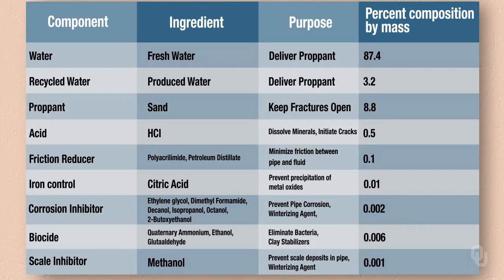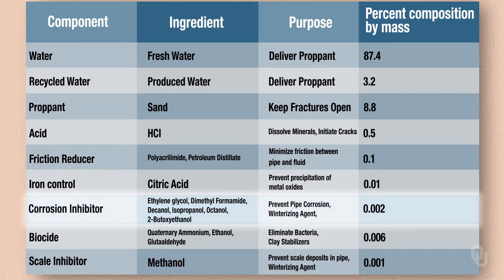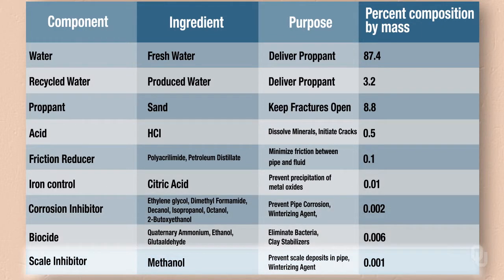In general, it is the ingredients with the lowest overall mass that present the most concern from an environmental perspective. This includes the corrosion inhibitors, biocides, and scale inhibitors.